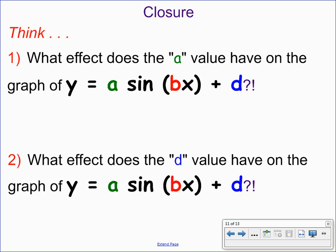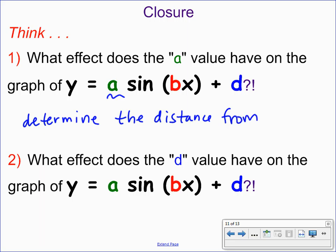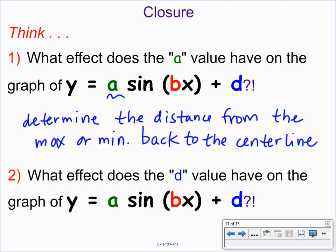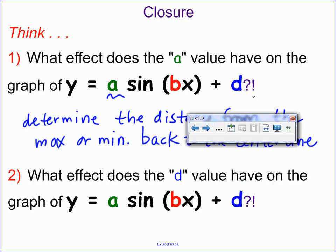For closure from day eight: all of you got your number six stamp from part two. What does 'a' do to the graph? 'a' is the maximum value away from the centerline, and negative 'a' is the minimum. So 'a' determines the distance that separates the maximum and minimum from the centerline — the height of the sine wave above or below the centerline.